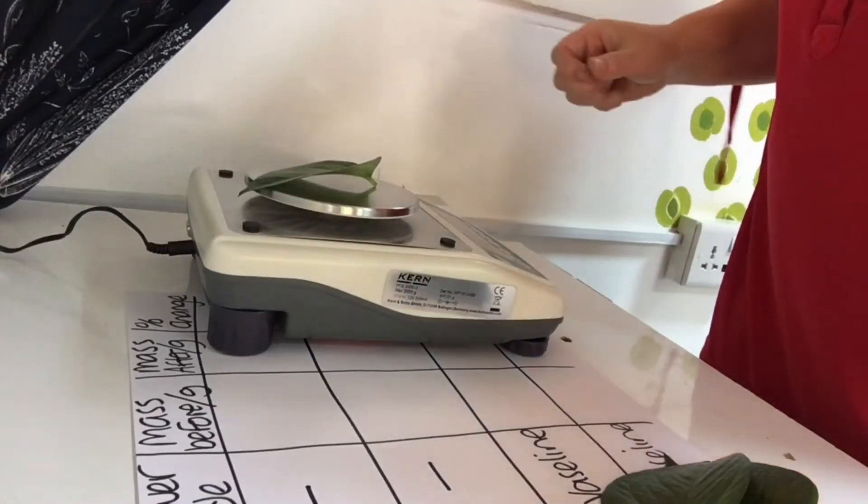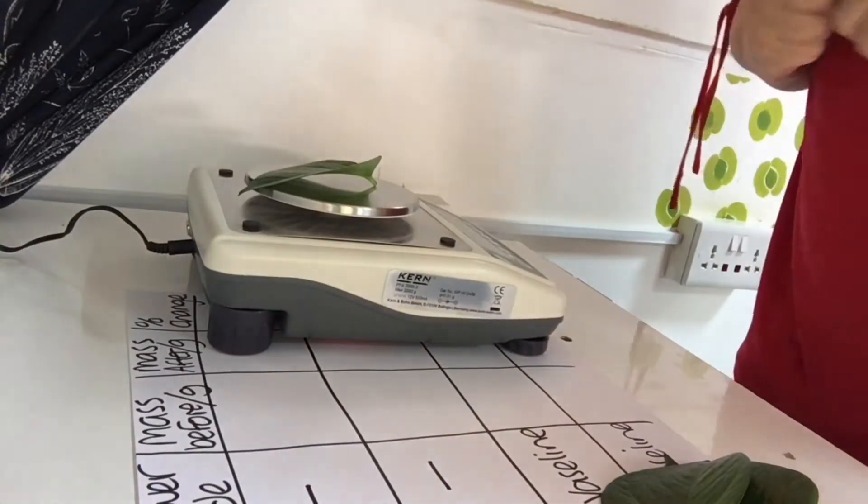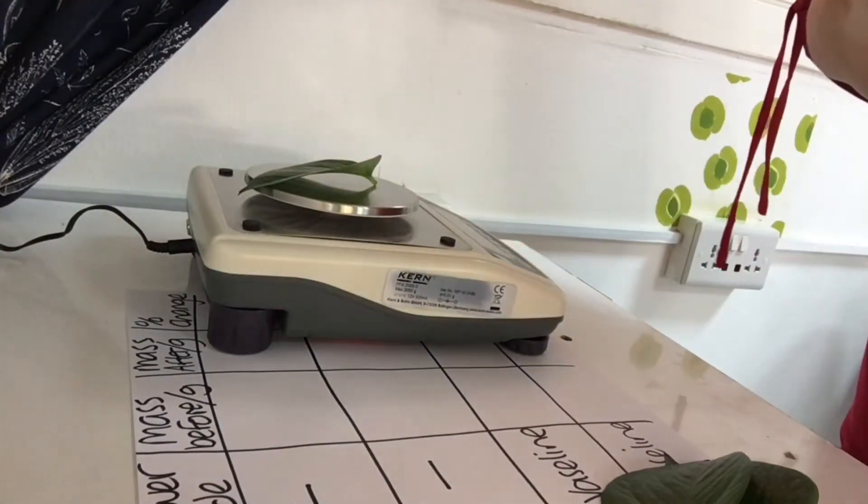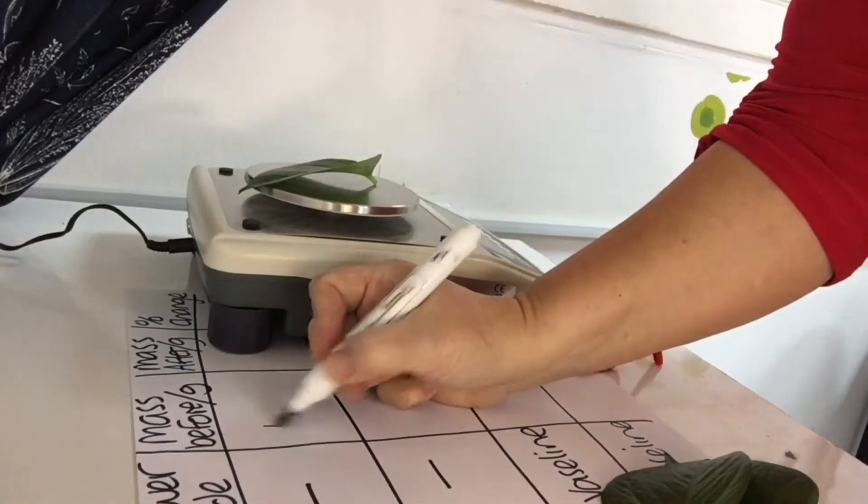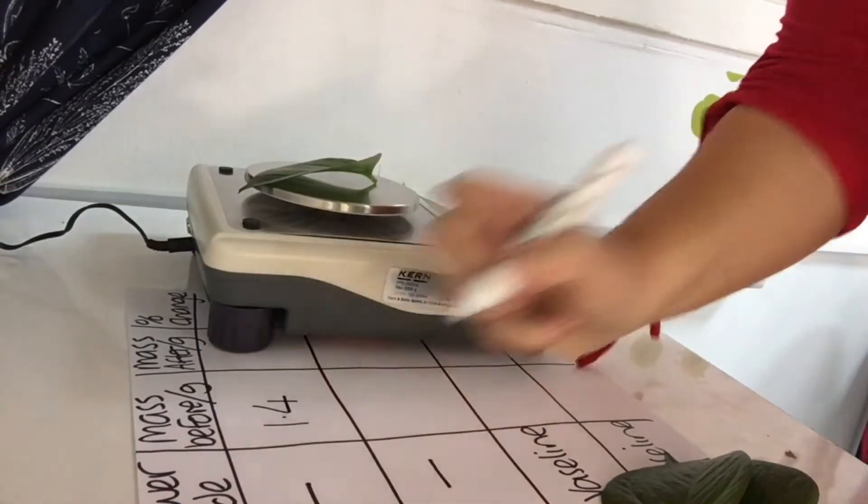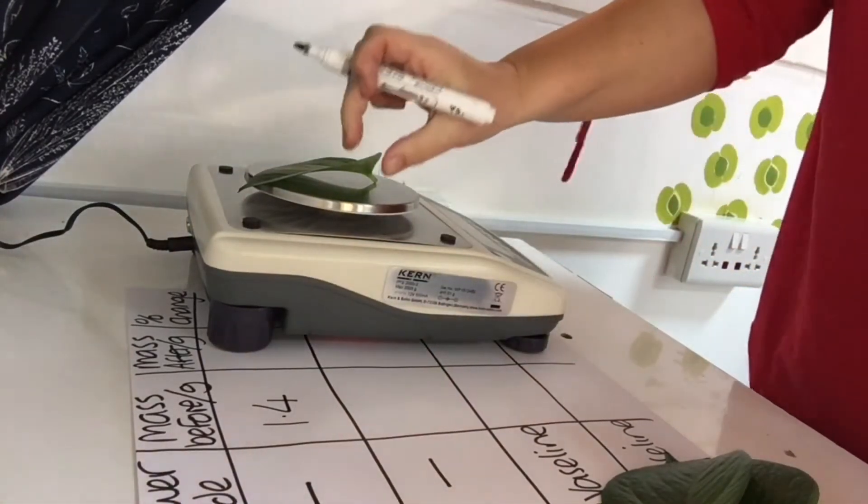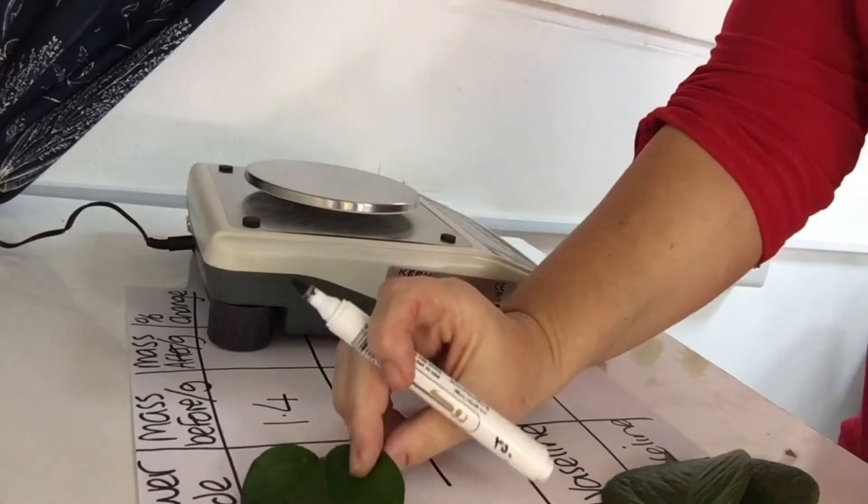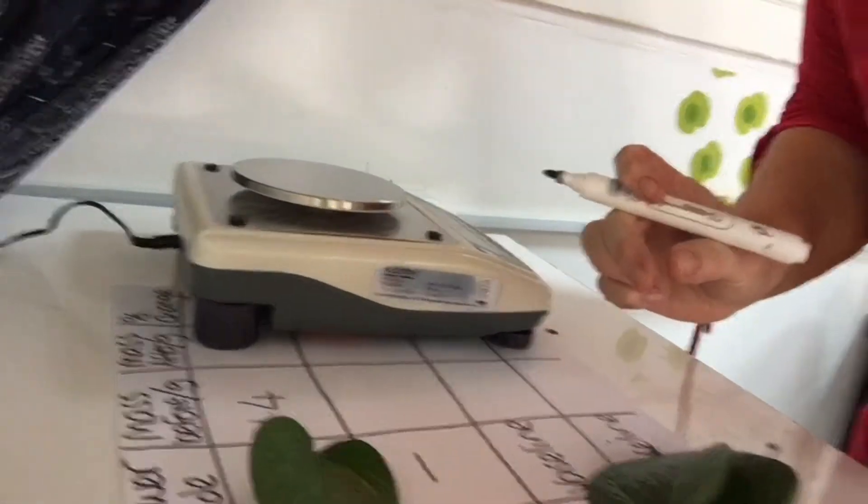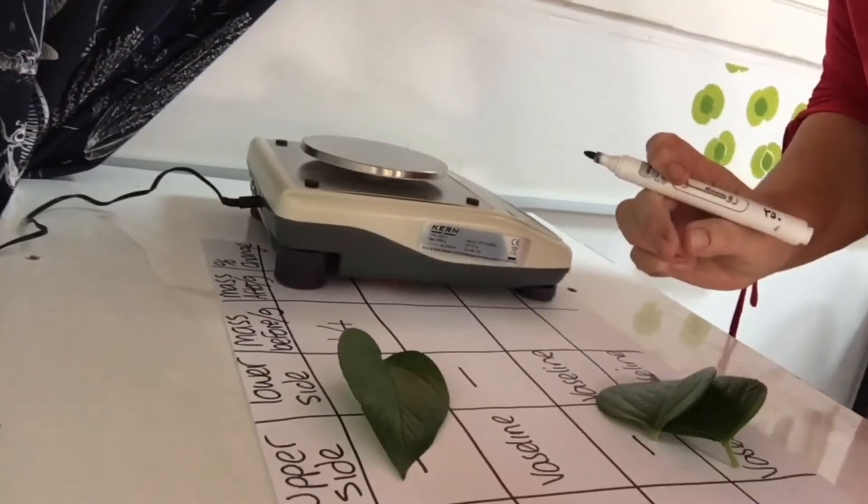Now measuring each leaf one by one, I'm going to remember that this is leaf A. I'll take the measurement and write it straight into the table that will form part of my lab book. I'll put it down next to the column so I remember that's leaf A, then repeat for B, C, and D.